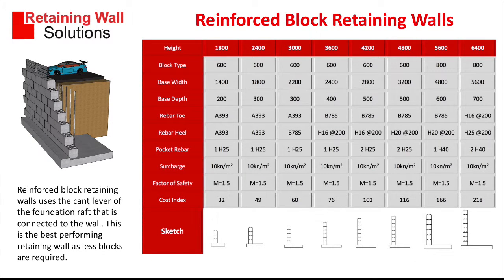The next type is a reinforced block retaining wall. This uses the principle of a cantilever. We've got a raft foundation and a wall, connected using reinforcement. The weight of the earth sits on top of the raft and that helps the design. In the table here you can see walls from 1.8 meters to 6.4 meters in height, and I'll explain more about the table on the next slide.